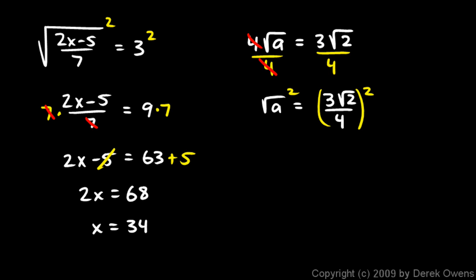And on the left, the square root of a squared is just a. And on the right, take note that the 3 will get squared, the square root of 2 will get squared, and the 4 will get squared. So, the 3 squared is 9. The square root of 2 squared is 2, and the 4 squared is 16. So, I have 9 times 2 over 16. That's 18 over 16. And that simplifies to 9 over 8. So, a is 9 eighths.